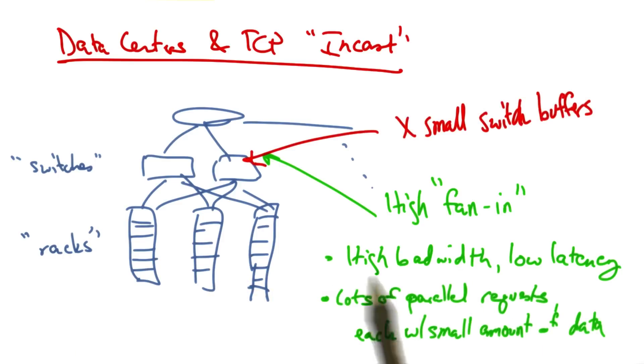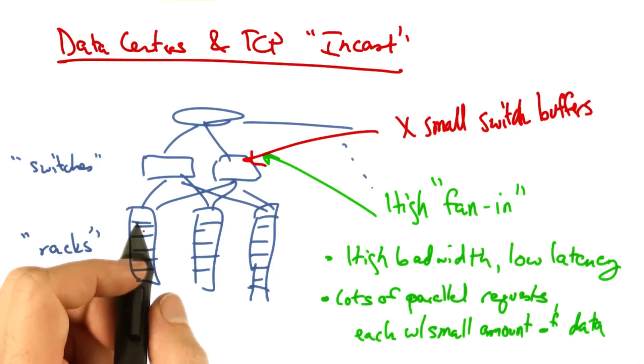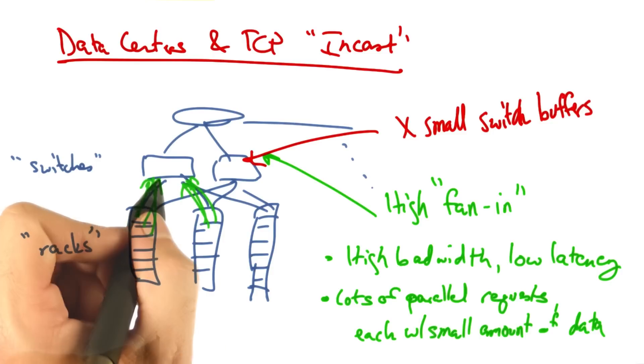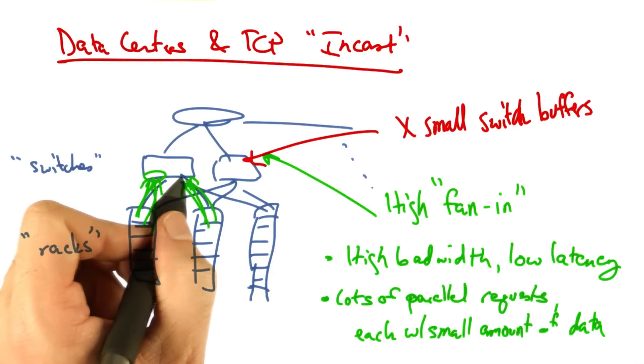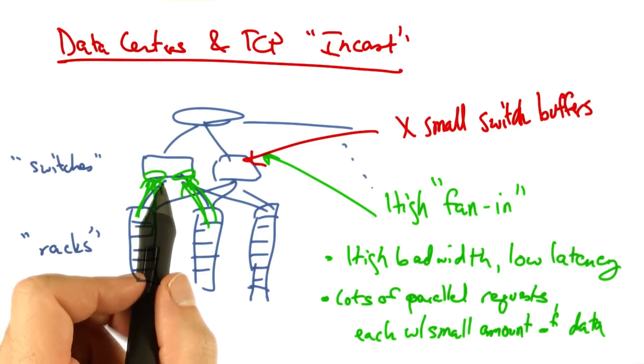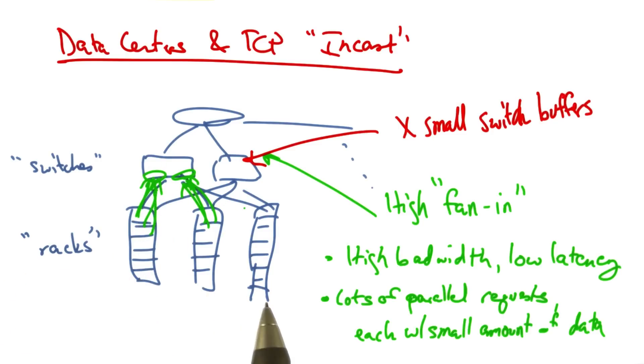The other constraint that we face is that the buffers in these switches can be quite small. So when we combine the requirements of high bandwidth and low latency for the applications, the presence of many parallel requests coming from these servers, and the fact that the switches have relatively small buffers, we can see that potentially there'll be a problem.